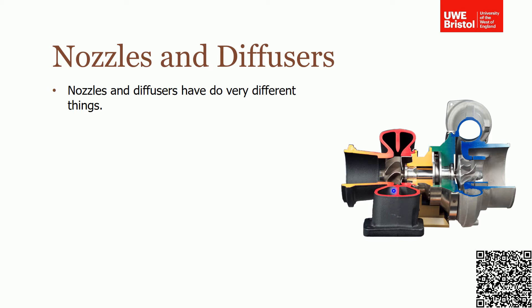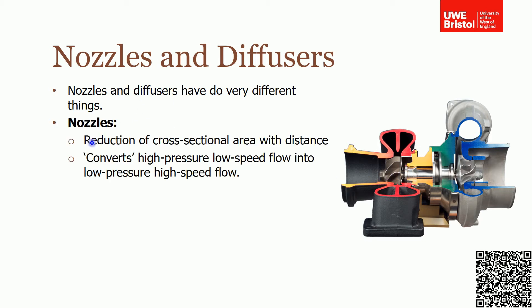The other side of the turbocharger is the hot side, where we have a turbine. Exhaust gases from the engine come into this manifold, the gas is accelerated onto the turbine blades, imparting momentum and causing them to spin, then the gases exit. Because the compressor and turbine share a common shaft, as the turbine spins it drives the compressor, compressing more air into the engine.